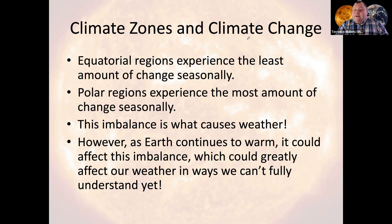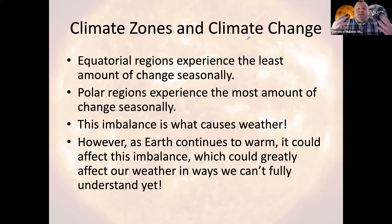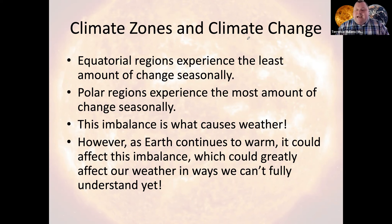In the wintertime, however, the equator is still warm but the pole is very, very cold. That creates a big temperature difference, which creates a lot of weather — blizzards, snowstorms, rainstorms, mid-latitude cyclones — all of those extreme events happen in the wintertime because the temperature difference is much more noticeable.